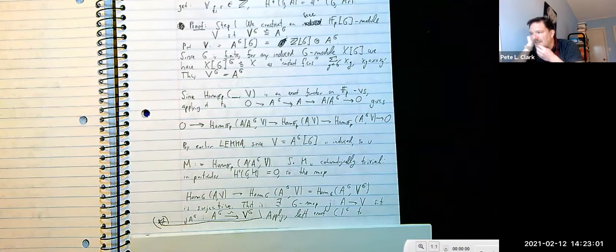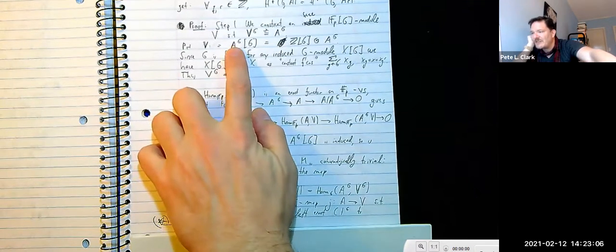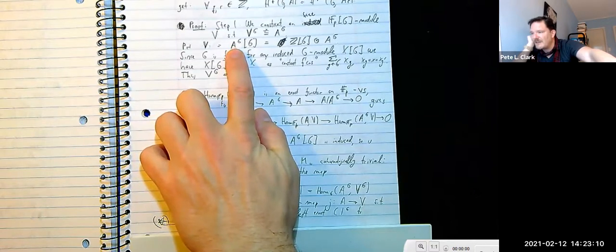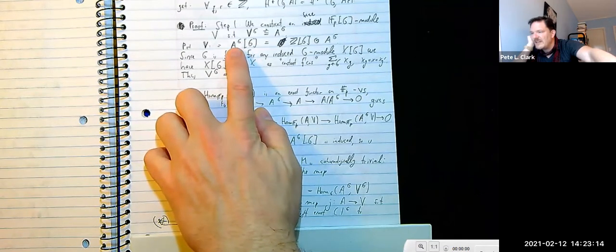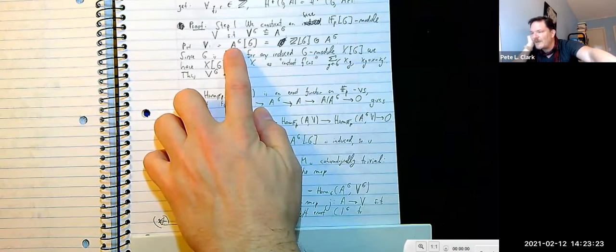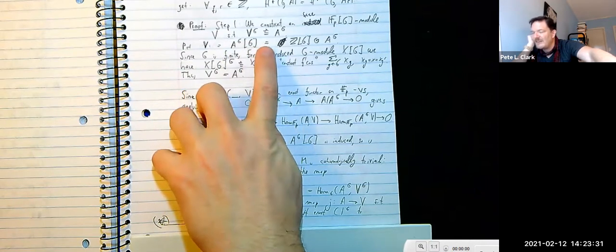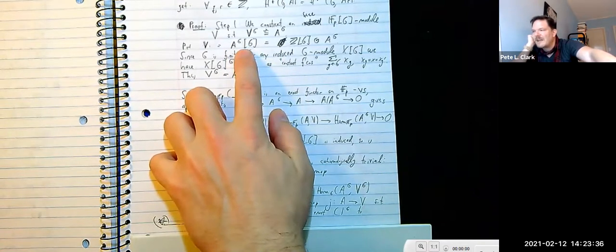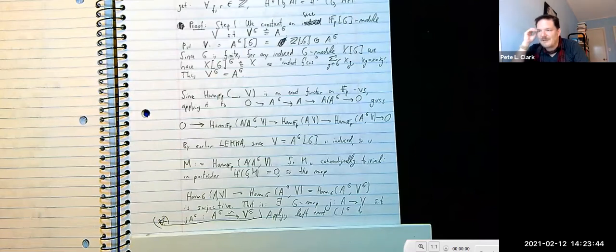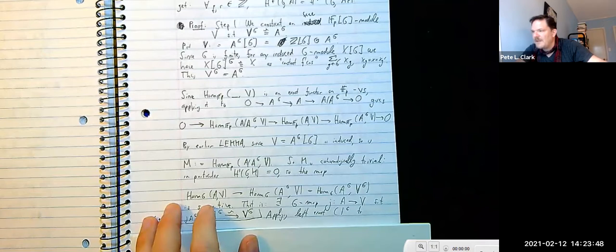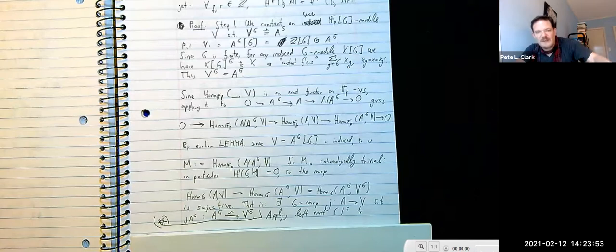Our candidate V is the induced module construction. It's a free F_p[G]-module because A^G is just an F_p-vector space — a free F_p-module — so A^G is a direct sum of copies of F_p. Therefore V is a direct sum of copies of F_p[G], which is exactly what it means to be a free module.